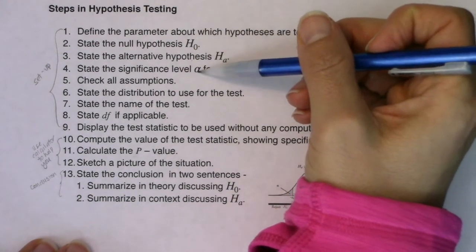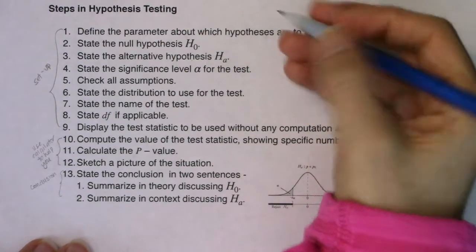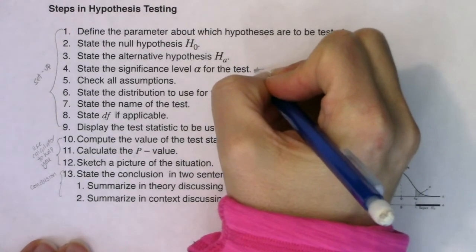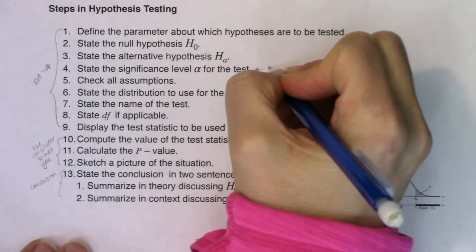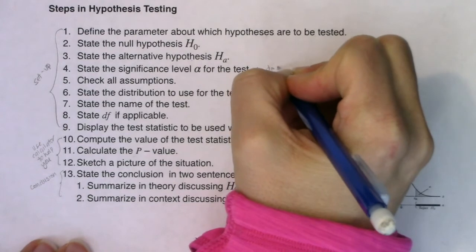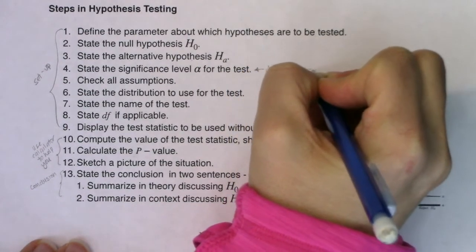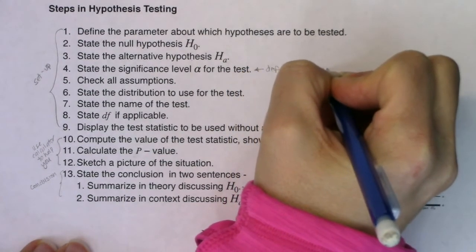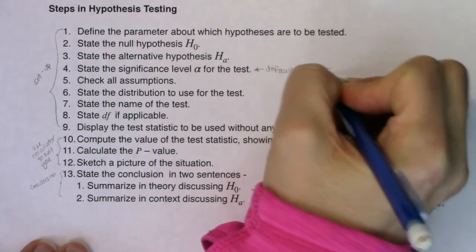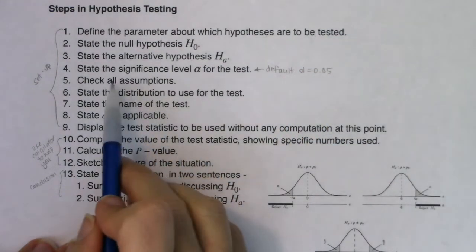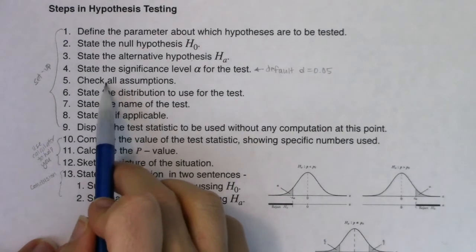Step four: state the alpha level. The default, if I don't give you one, is the industry standard of 5%. That represents the probability of making a type one error — we'll make a type one error 5% of the time. Step five: check your assumptions. We've checked assumptions before in confidence interval land.